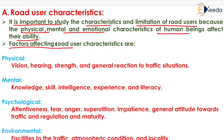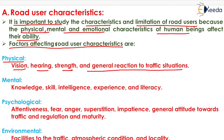Factors affecting road user characteristics. The first factor is the physical factor: vision, hearing, strength, and general reaction to traffic situations come under the physical factor.